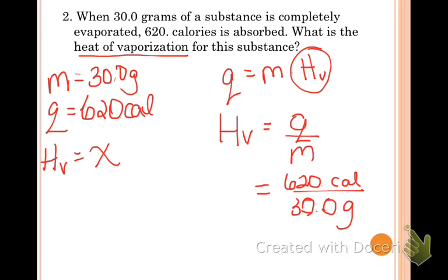Plug this into your calculator. We have an answer with 3 sig figs, so we'll end up with 20.7. Let's keep our units. Calories, because we can't cancel anything, so it's calories per gram. We know that heat of vaporization has a unit of calories per gram, and that's acceptable.